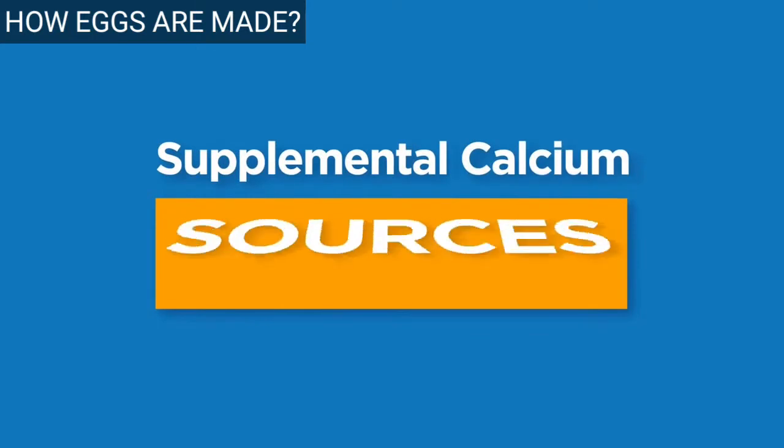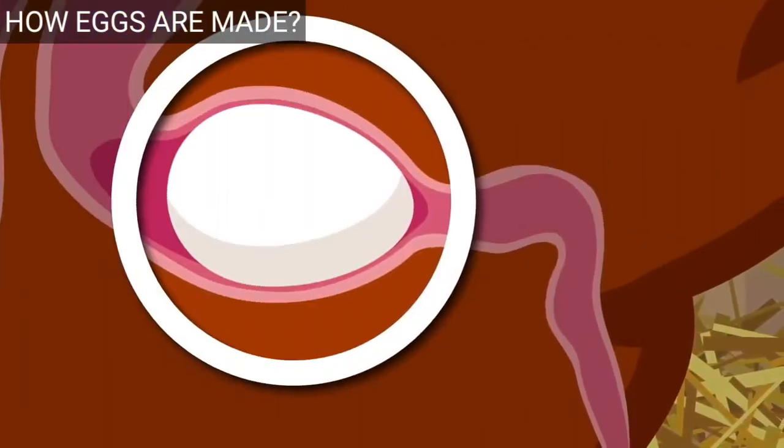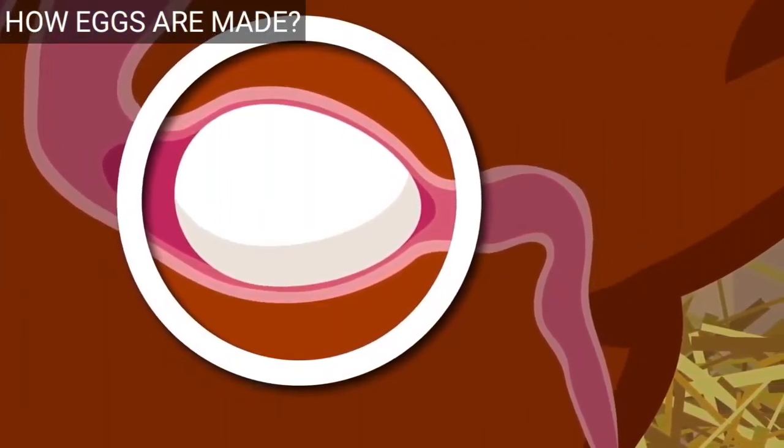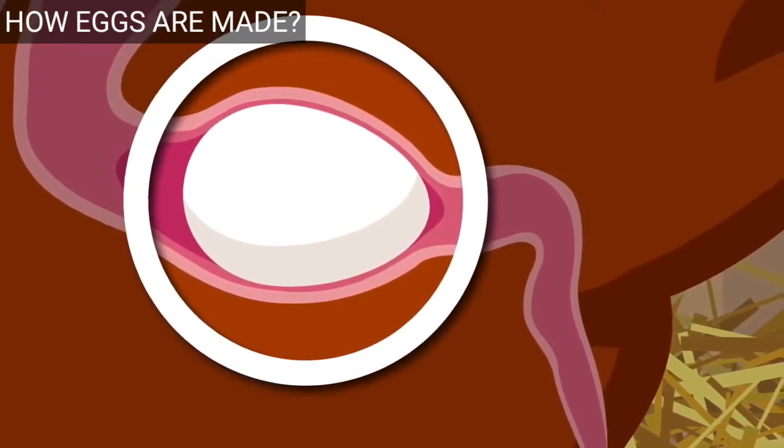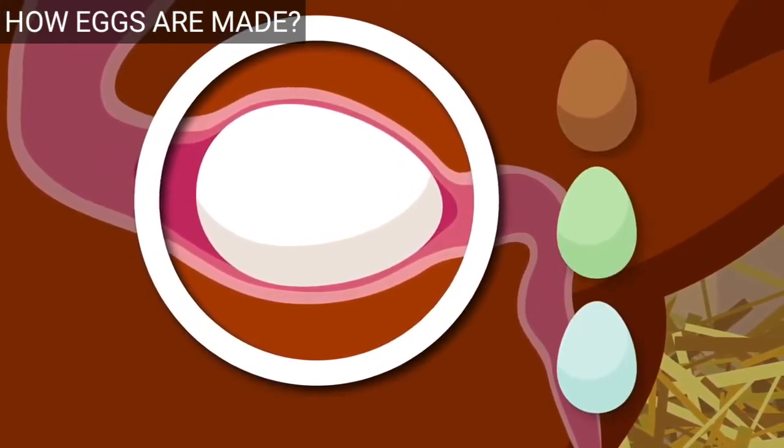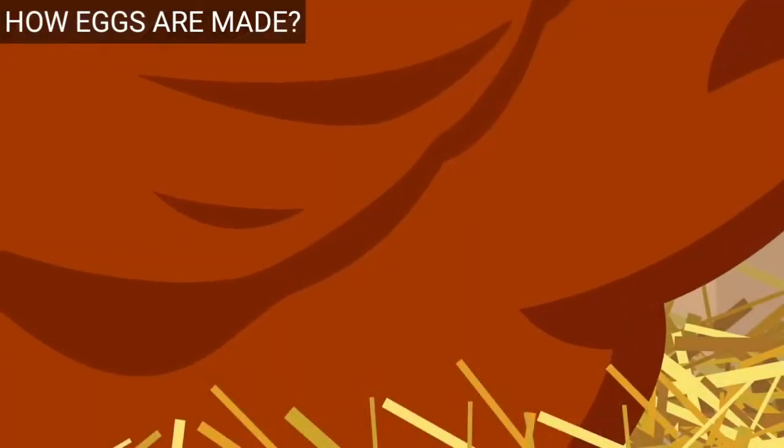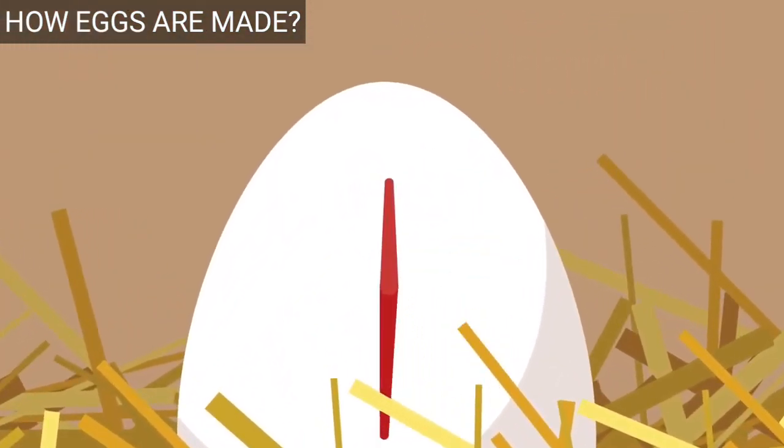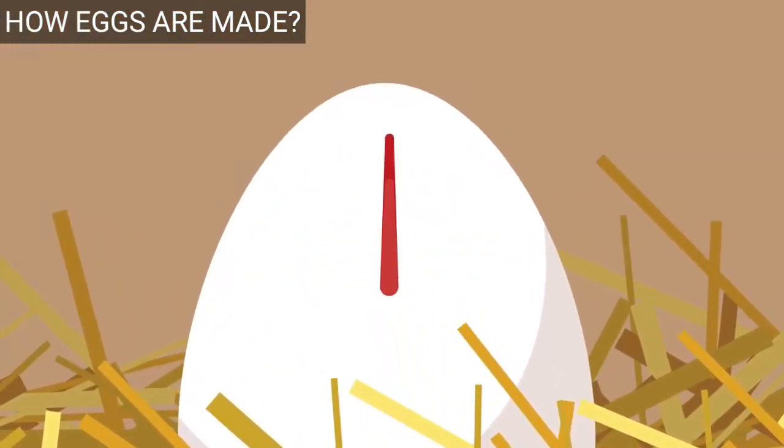Pigment is also added to the shell. Depending on the breed, the shell may be colored in shades of white, blue, green, or brown. Once complete, the egg passes through the vent of the chicken and into the nest. This incredibly intricate process takes roughly one day.